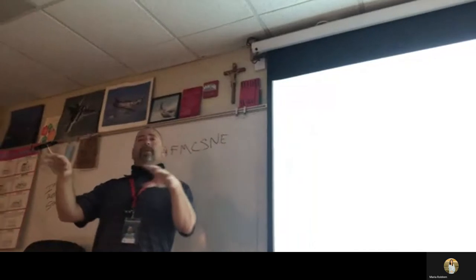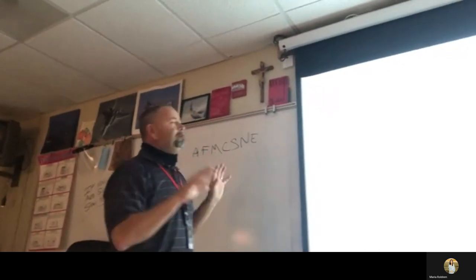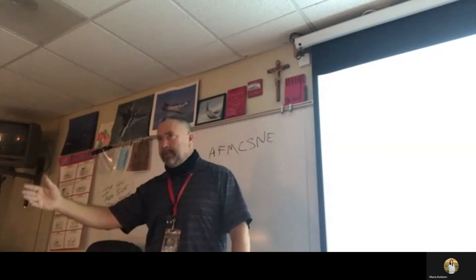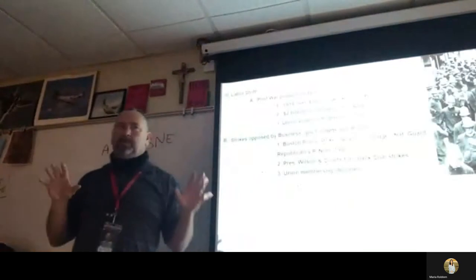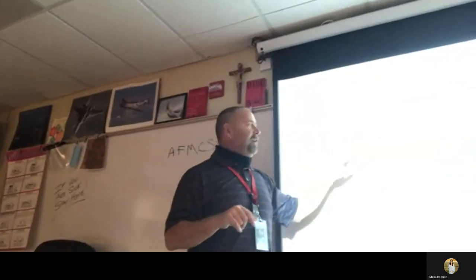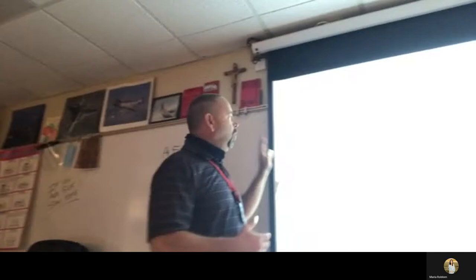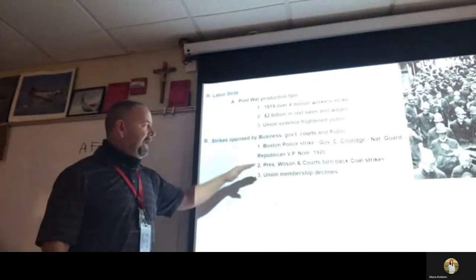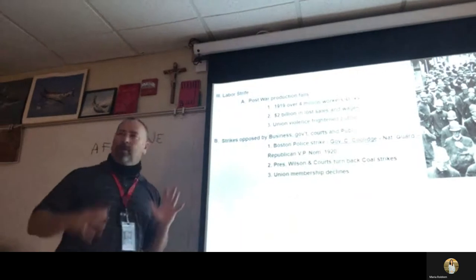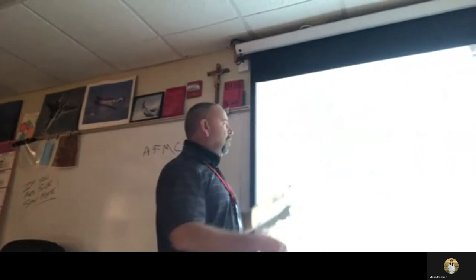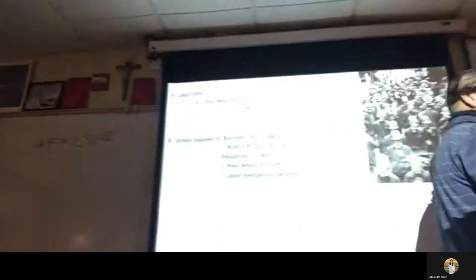Harding is running for president — the election is in November 1920. He sees Coolidge dealing with the Boston police issue in Massachusetts and asks him to be his vice president. President Wilson and the courts will turn back the coal strikers. All this bad press and media about union violence will cause union membership to decline in this country — temporarily. We'll come back to that, and I'll show you some graphs.